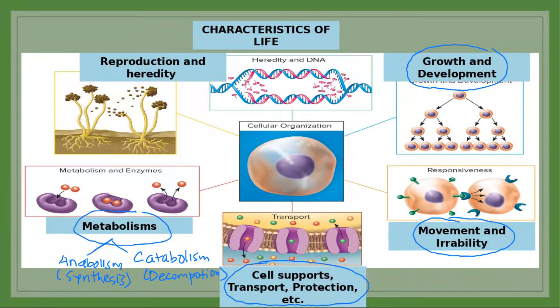The fifth and last characteristic is reproduction and heredity. All living things have the ability to reproduce, allowing them to remain in existence — if unable to reproduce, they undergo extinction. Reproduction means producing new individuals, and heredity is the ability to transfer genes and characteristics from parents to offspring.